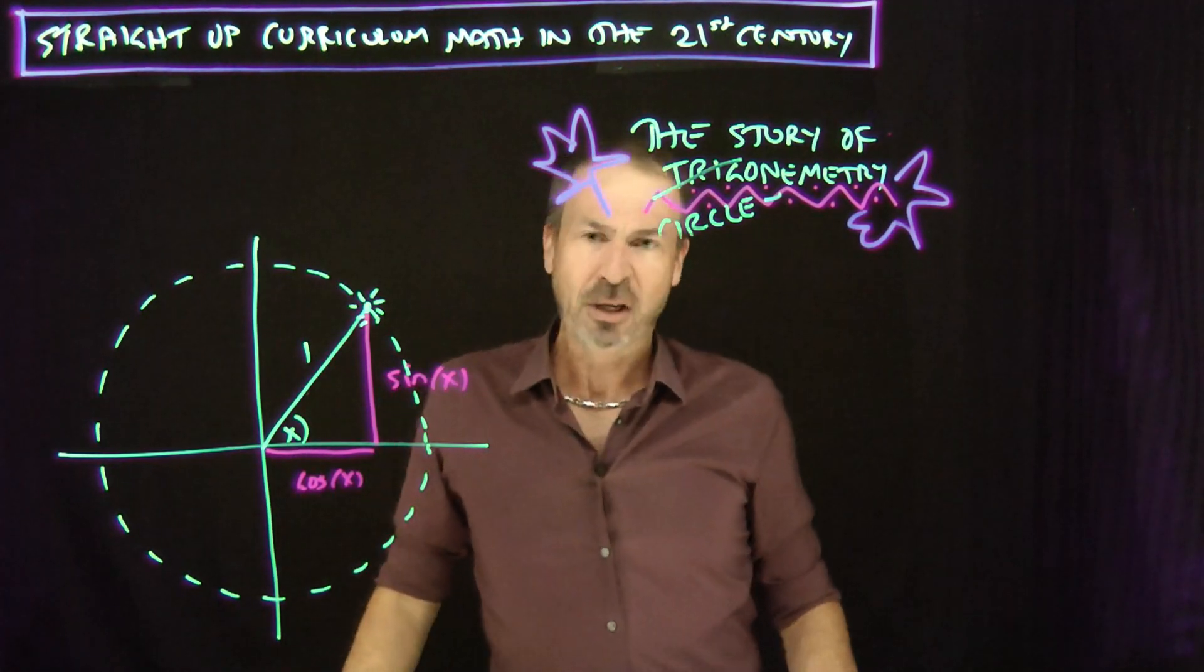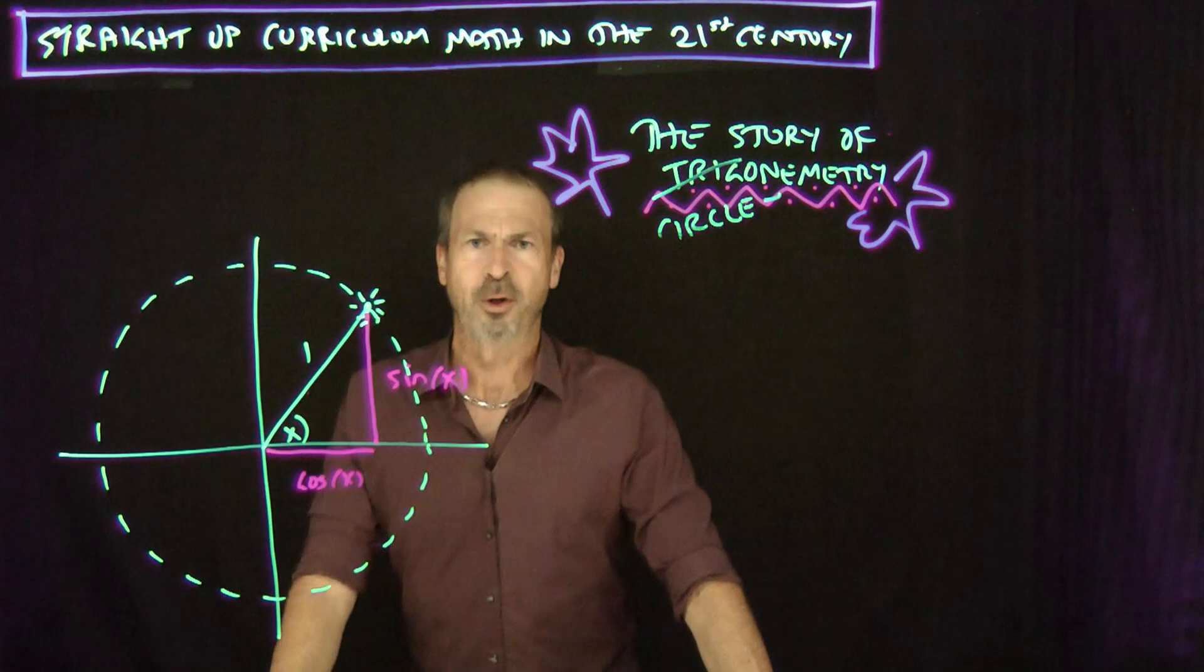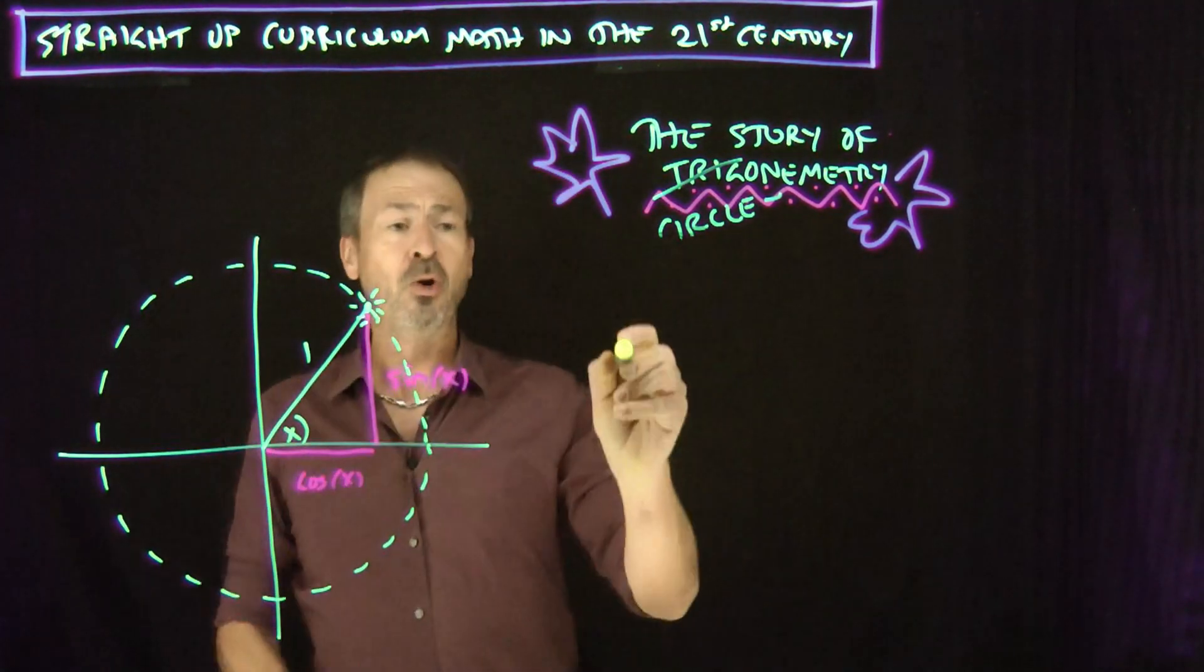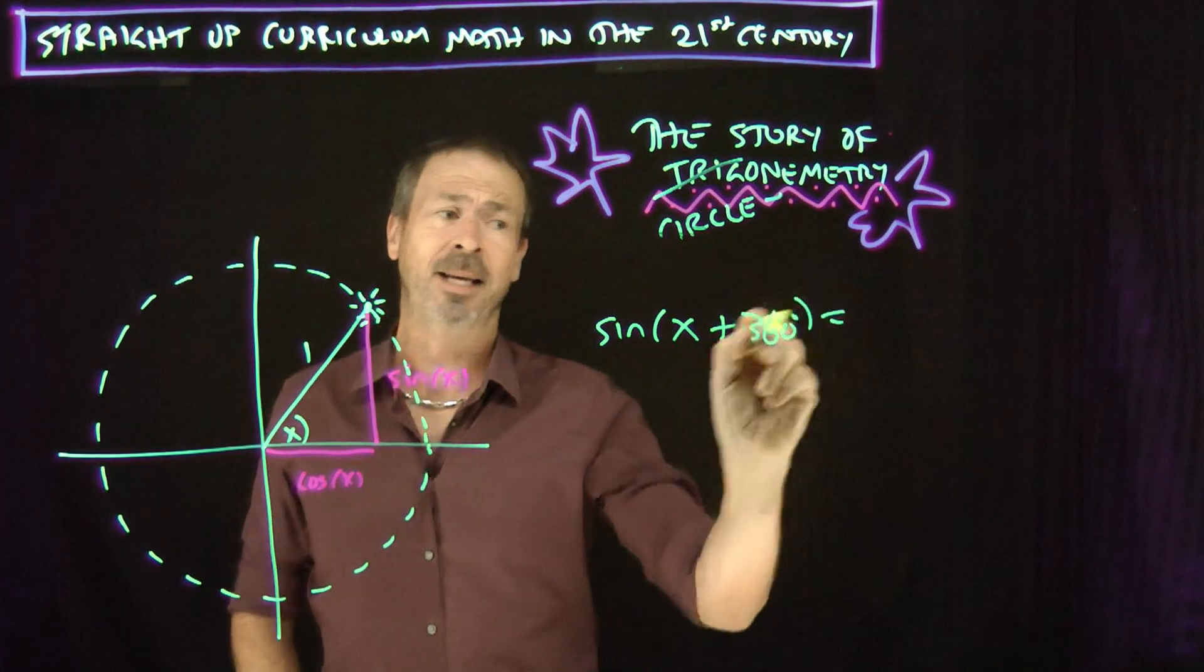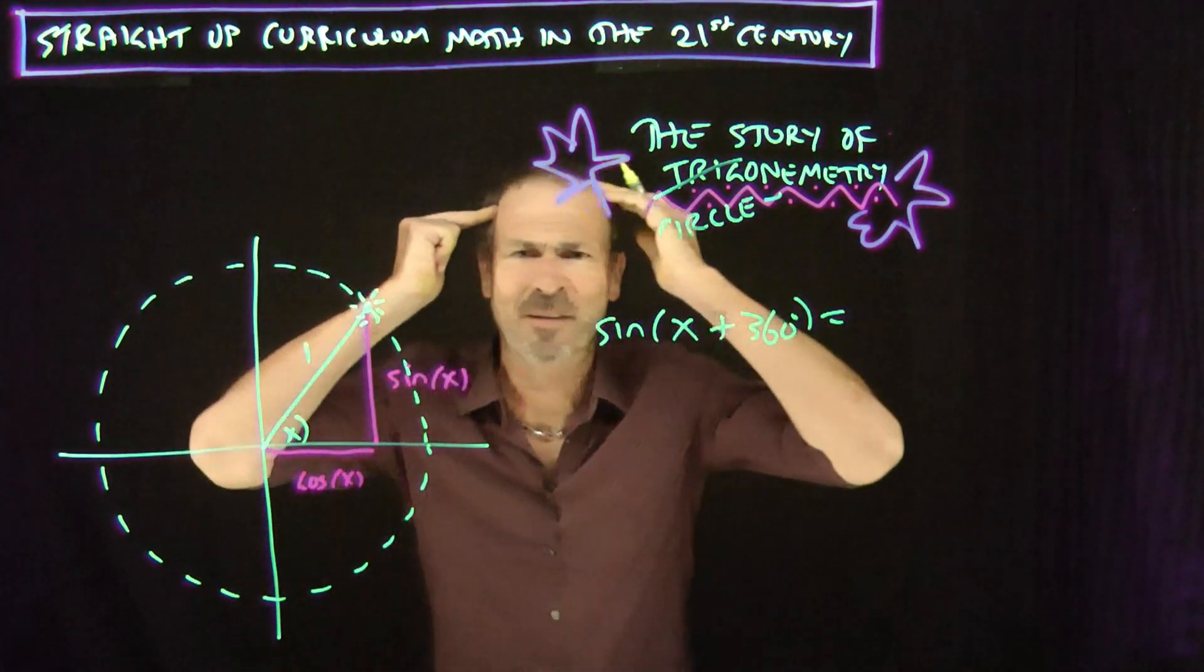But then people might say, well we can actually start writing down some official identity, some circleometry identity. For example, we do know right away that sine of an angle plus an extra 360 degrees would have to be, what would it have to be? I have to think about it.